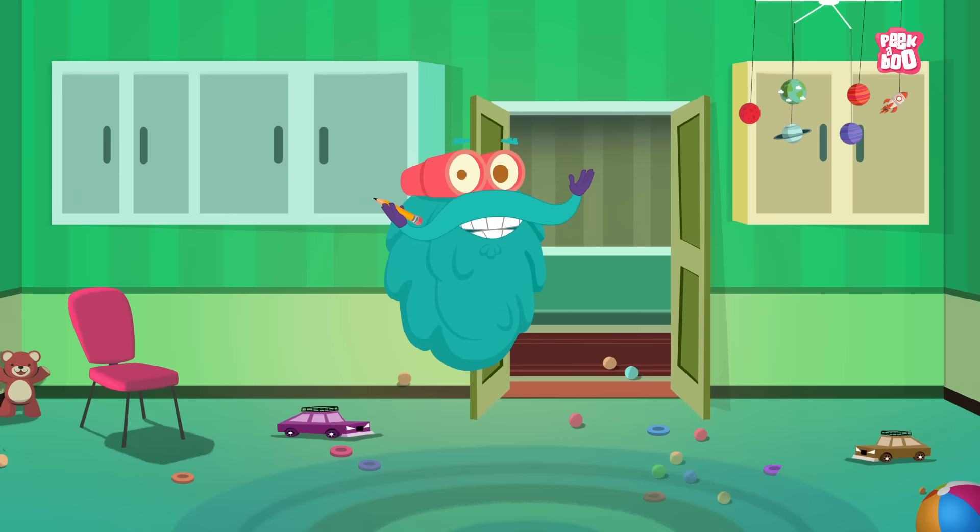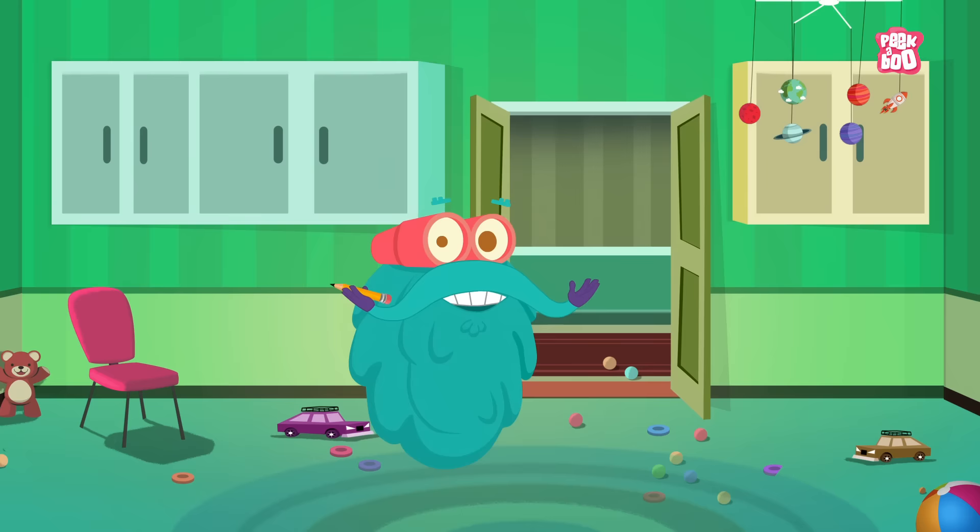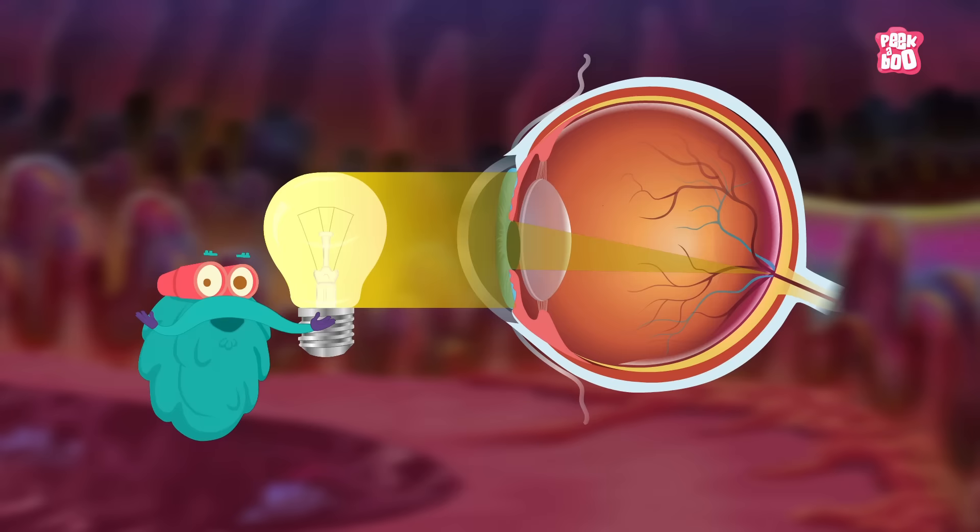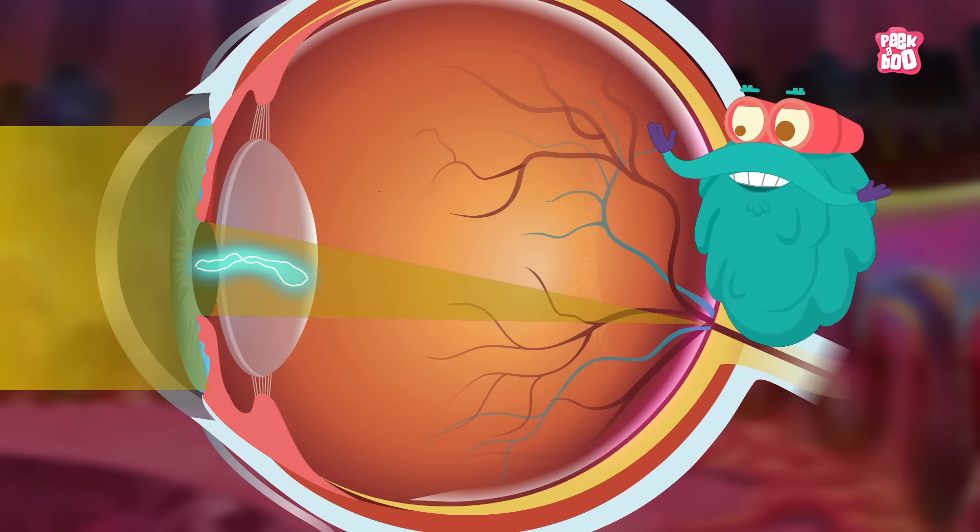It focuses and defocuses depending on how far the object is from your eye. Now, the light reaches the retina. This acts as an image sensor of a digital camera. Well, in simpler words, it converts the light that you take in into electronic signals.